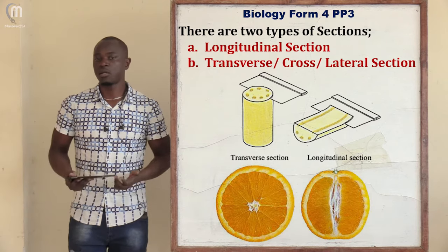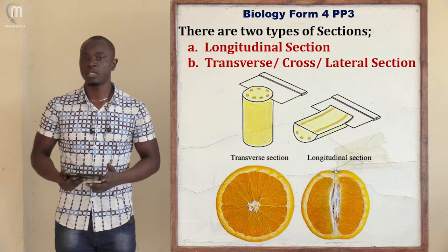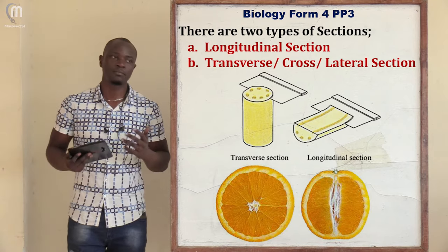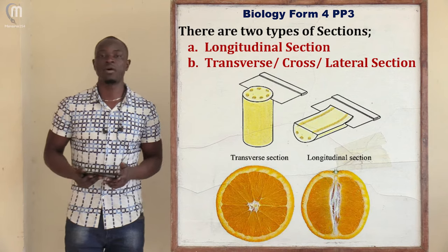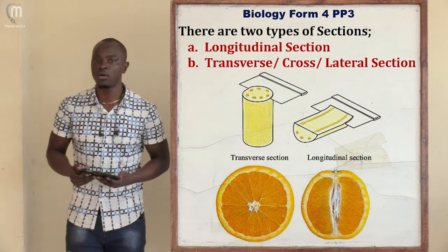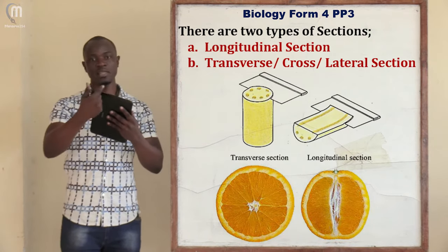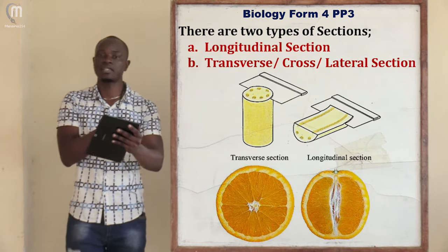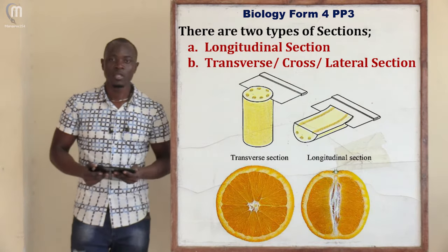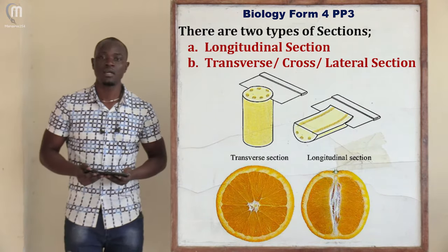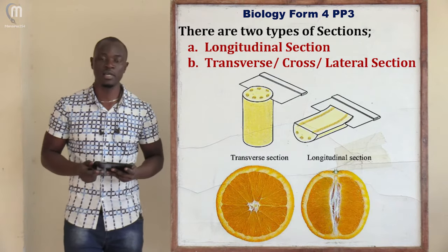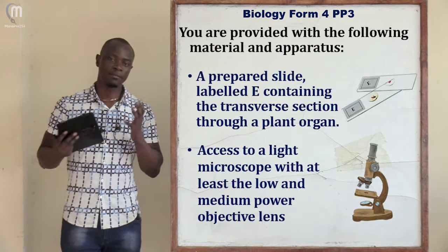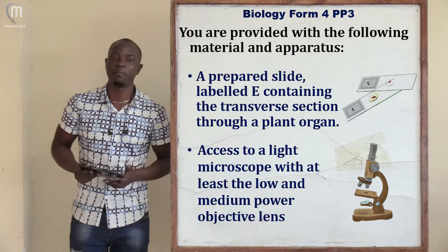The transverse section can also be called a lateral section. A longitudinal section — just from the word 'longitude' we studied in Geography — refers to lines from top to bottom. In Biology, a longitudinal section is where you cut a specimen from top to bottom. If you cut the specimen across, that is a transverse or lateral section. This question specifically stated that the specimen was cut by transverse section through a plant organ.